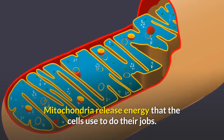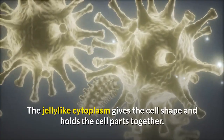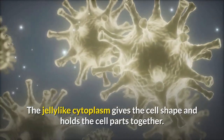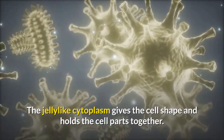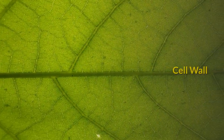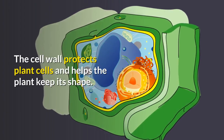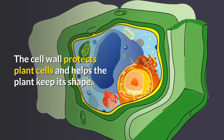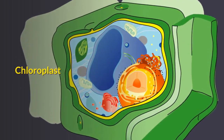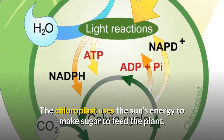Mitochondria release energy that the cells use to do their jobs. The jelly-like cytoplasm gives the cell shape and holds the cell parts together. The cell wall protects plant cells and helps the plant keep its shape.